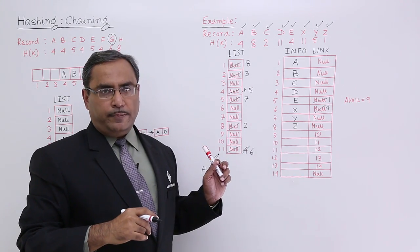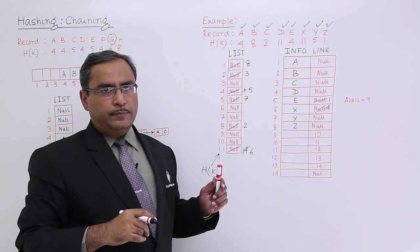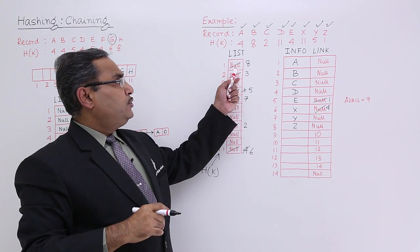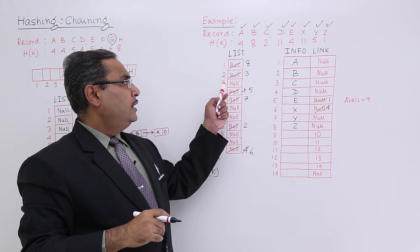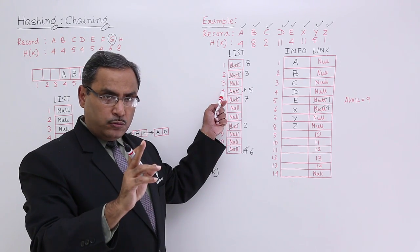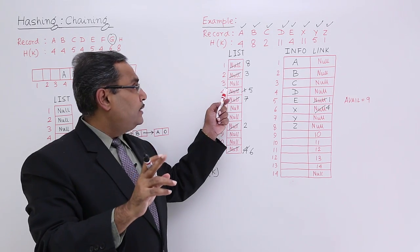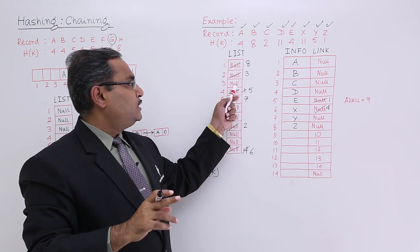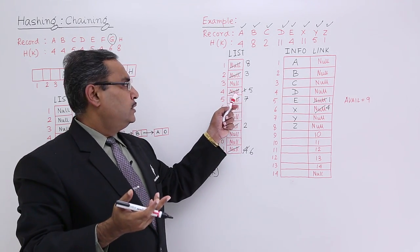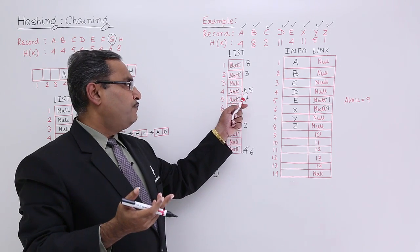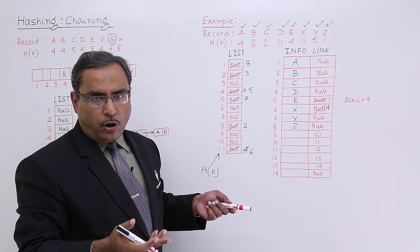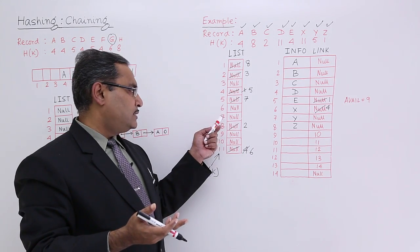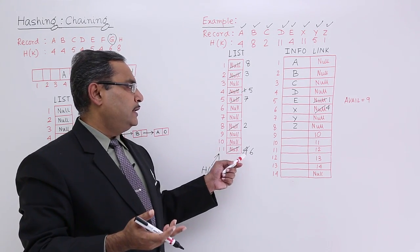So this is the ultimate diagram. Initially it was null, now it is 8. Initially it was null, now it is 3. I found no record with h of k equal to 3. Yes, that is true. That is why it is pointing to no linked list. Similarly for 4, 5, we found records. For 6, 7, we did not find any record with h of k equal to 6 or 7, so null are there and so on.